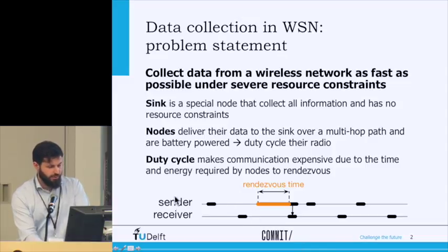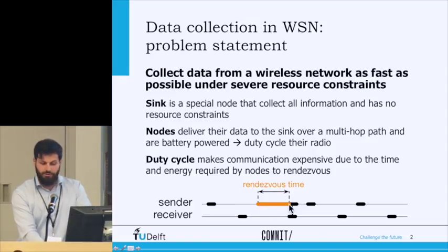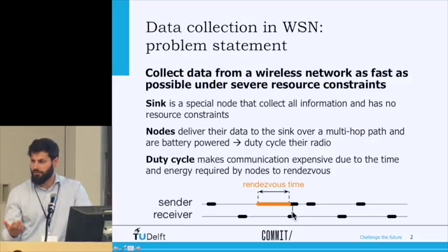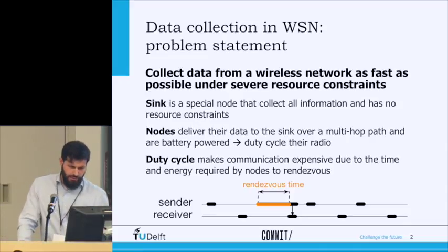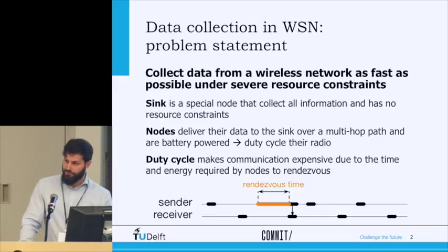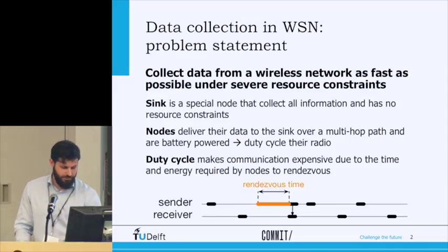Here is a simple example in which you have a sender and a receiver that duty cycle the radio. When you see bold lines, the radio is active. As soon as the sender wants to contact the receiver, it needs to turn on its device and keep it on until the receiver turns on. When both are awake, that is when they rendezvous. This rendezvous is one of the main sources of inefficiency in duty cycle mechanisms, which is why I am introducing it.